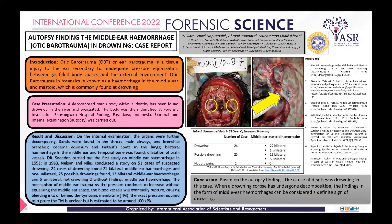On internal examination, the organs were further decomposing. Sand was found in the throat, main airways, and bronchial branches. Diatoms and petechial spots were found in the lungs. Bilateral hemorrhage in the middle ear and temporal bone was found, along with dilatation of brain vessels.